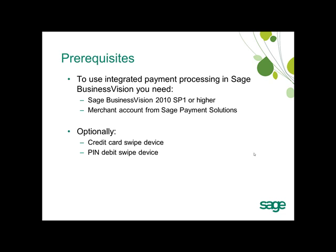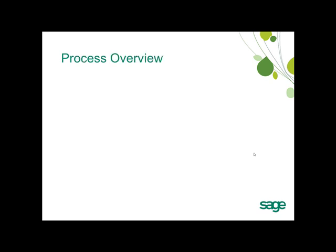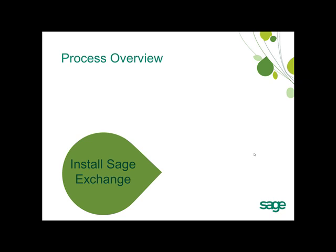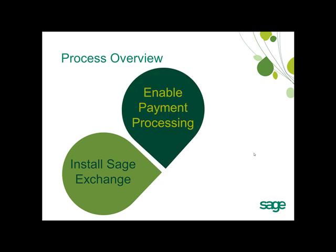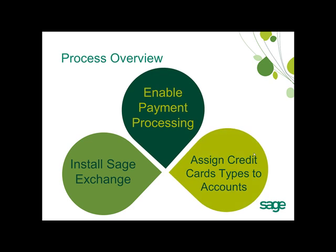Once you have met these prerequisites, you're ready to install Sage Exchange and set up the integration with Sage Business Vision to accept integrated credit card payments. There are essentially three steps: first, install the Sage Exchange application on the local workstation; next, enable payment processing within Sage Business Vision; and finally, assign your credit card tender types to the specific accounts where funds should be deposited after payment is received.